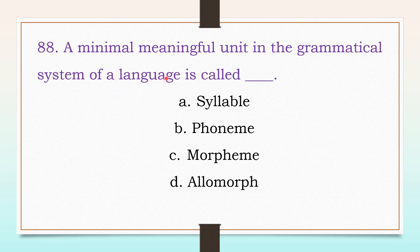A minimal meaningful unit in the grammatical system of a language is called: syllable, phoneme, morpheme, or elemorph. The answer is: morpheme.